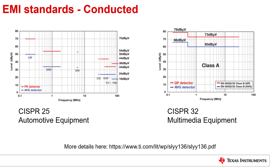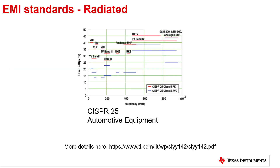The standards are broken into conducted and radiated limits depending on the mode of interference. The bars in the plots here represent the maximum conducted emission limits that can be tolerated while measured through standard EMI measuring equipment for the device under test. Similar standards also exist for radiated interference limits as shown for automotive equipment in this chart. More details about the exact standard and the test methodology can be found in the link shown.